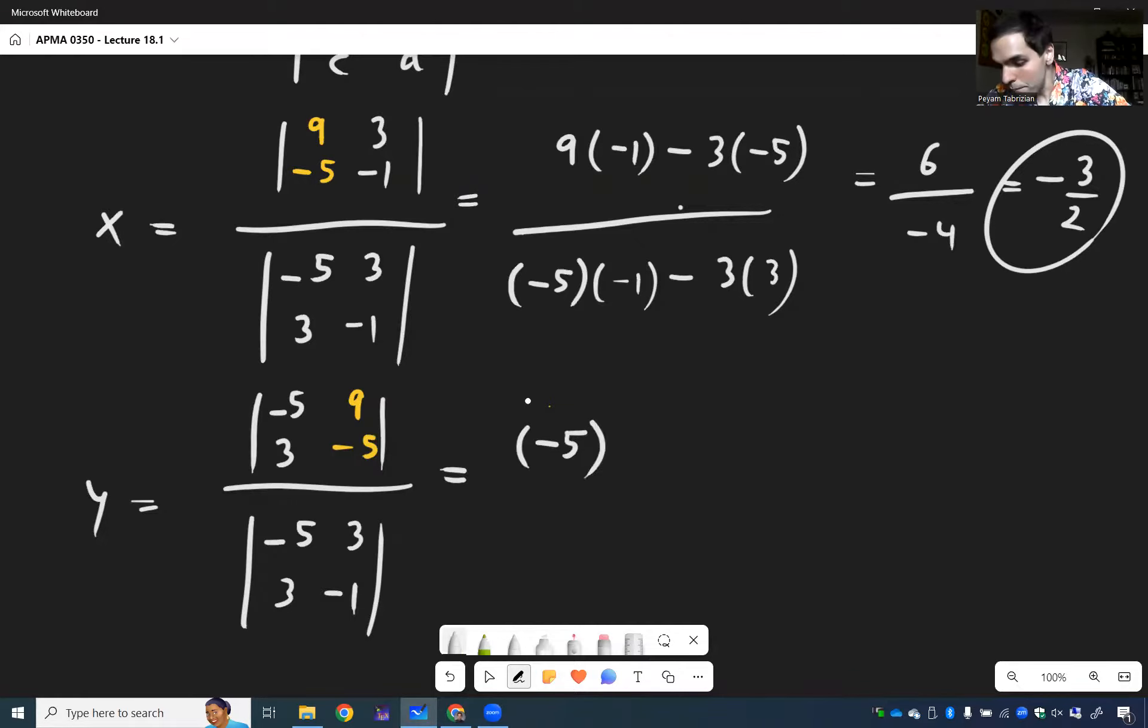And then you get -5 times -5, minus 9 times 3. Now for the denominator, the good news is you don't need to do it again. Because notice, both denominators are the same. So it becomes -4. And then 25 - 27. So -2, -2 over -4, which is 1/2.